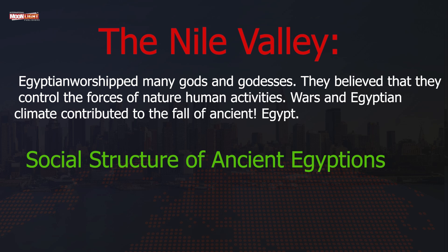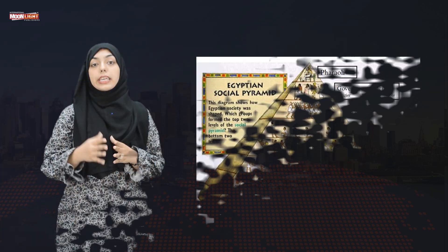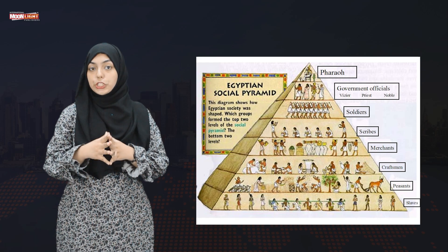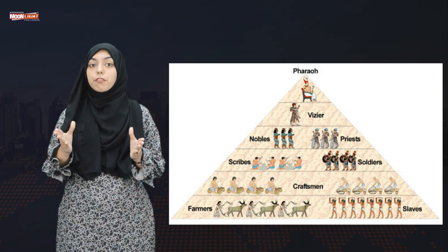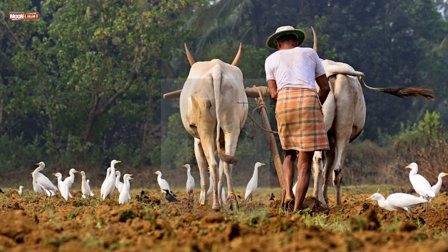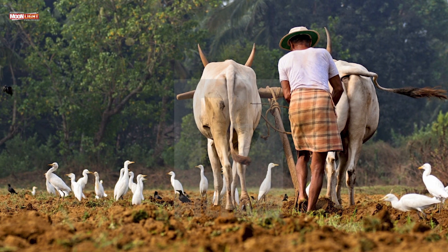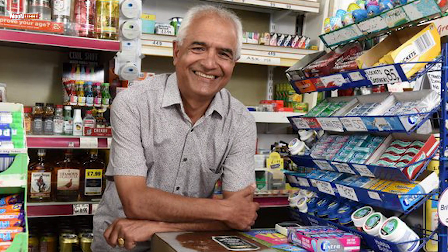The social structure of ancient Egypt resembles a civilization pyramid. The population of ancient Egypt was divided into groups of people with different jobs and responsibilities. Farmers and shopkeepers are on the 5th level of this social structure.